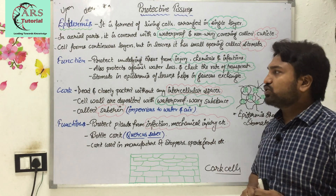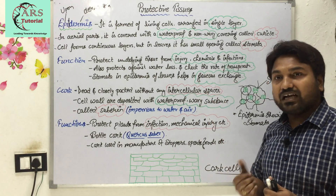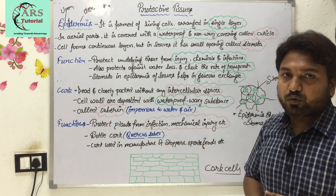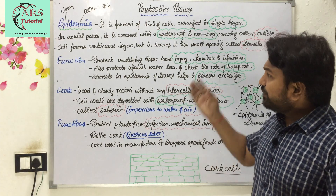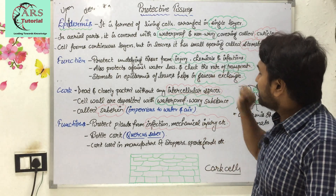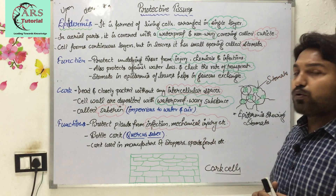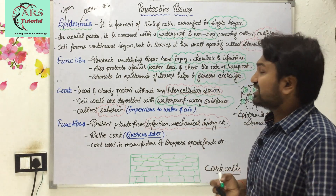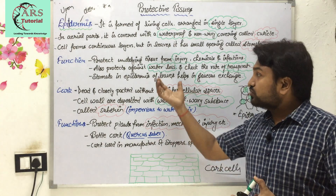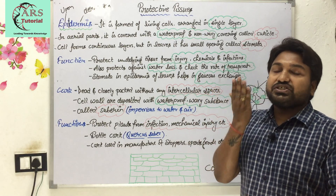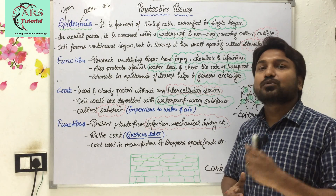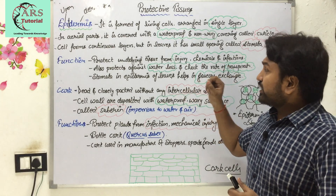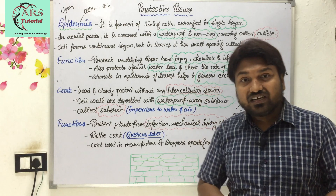The function of protective tissue is to protect underlying tissue from injury, chemicals, and infection. Just as a raincoat protects you from rain, epidermis protects the underlying tissue of plants from mechanical injury, chemicals, and infection. It also protects against water loss — this is a very important point. It checks transpiration, which is the process of loss of water in the form of vapour from the aerial parts of the plant.